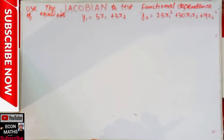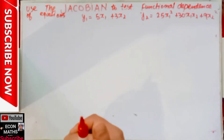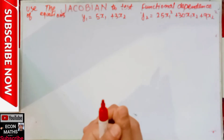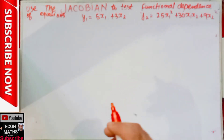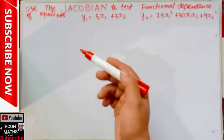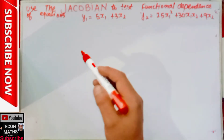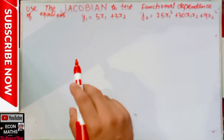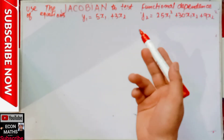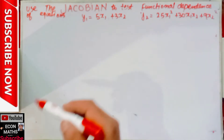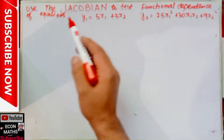Hi, this is Hilal. In this video on the Mathematical Economics series, we will see how to use the Jacobian determinant to test functional dependence of equations. The concept of the Jacobian was given in an earlier video. Now we will use that concept to test the functional dependence of the given equations.